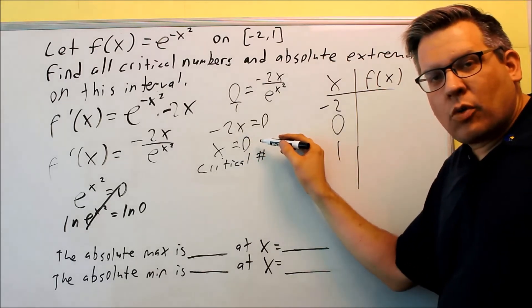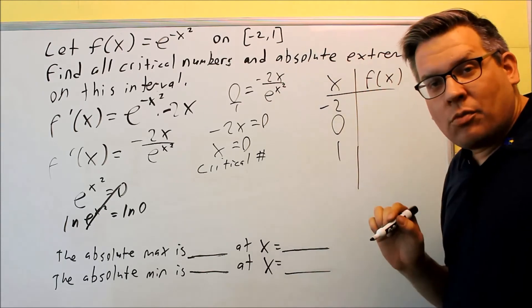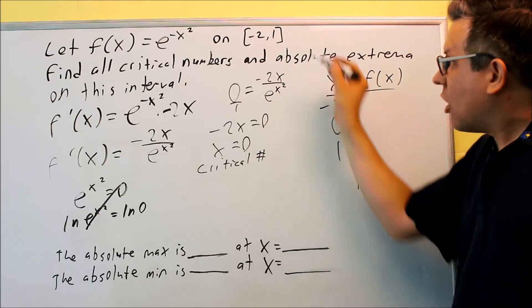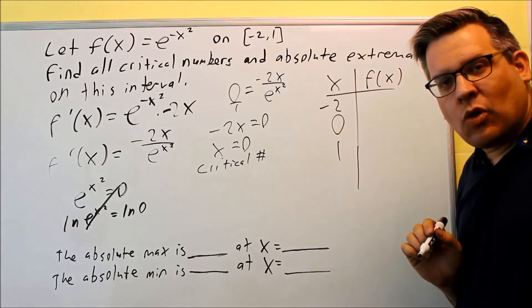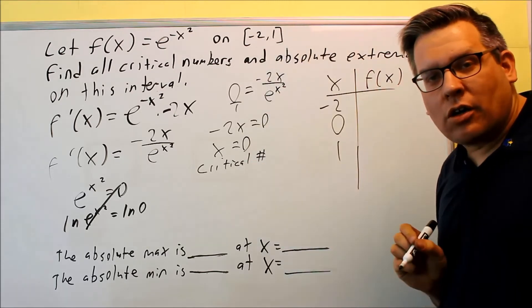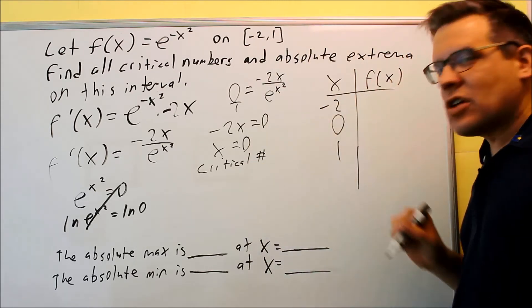Okay, so again, by the way, let's suppose that this critical number was a number that was outside of our interval. Well, if that occurs, then that means all you would check is actually just the endpoints only. The critical number that you find has to be in our interval, which it is, so it fits on our table.